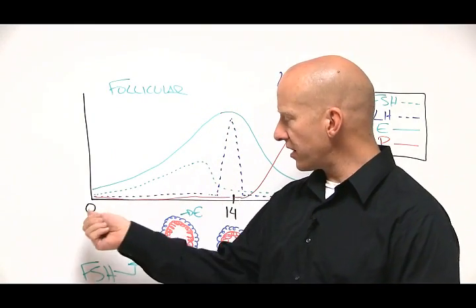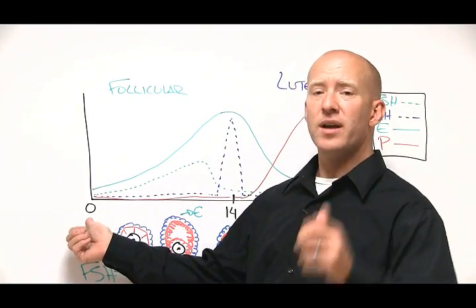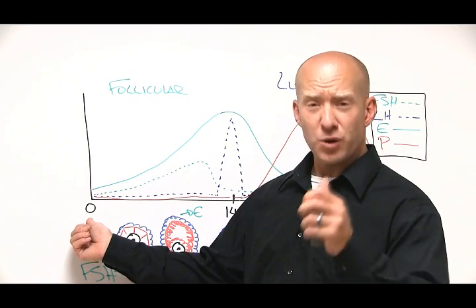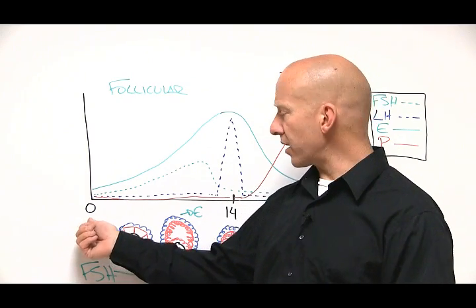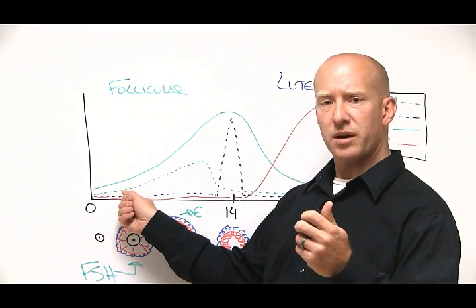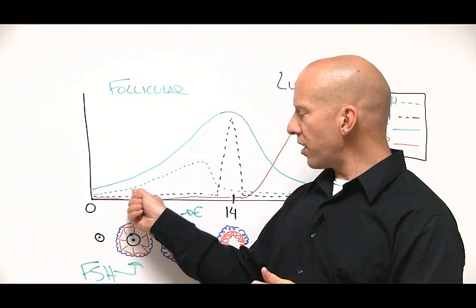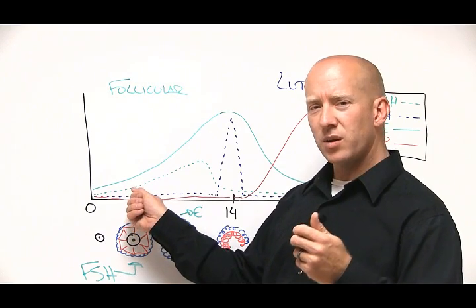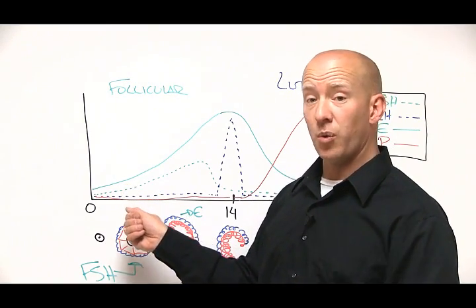So the first part of the month, the very first thing that happens, and by the way, day zero is the first day of bleeding. So your first day of bleeding during your menstrual cycle, FSH, this dotted green line, starts to be made by your pituitary gland. Now if you remember from the previous part of this video, FSH is associated with the ovaries making estrogen, and here's why.